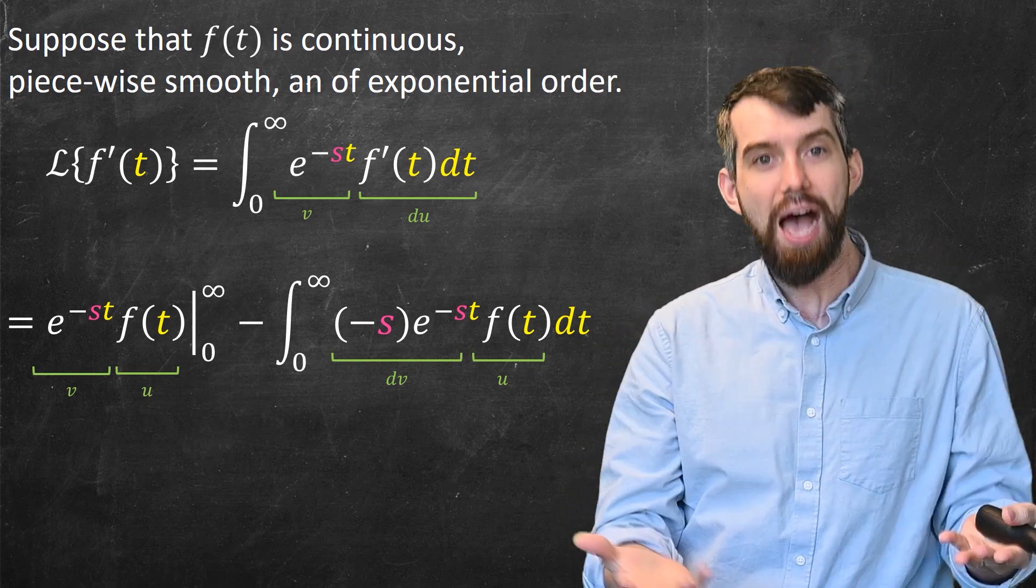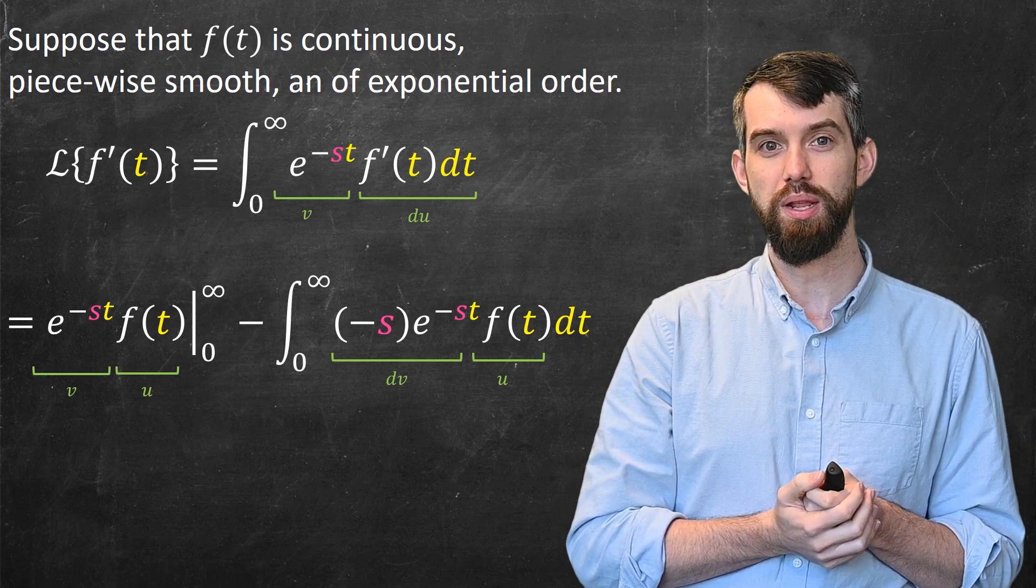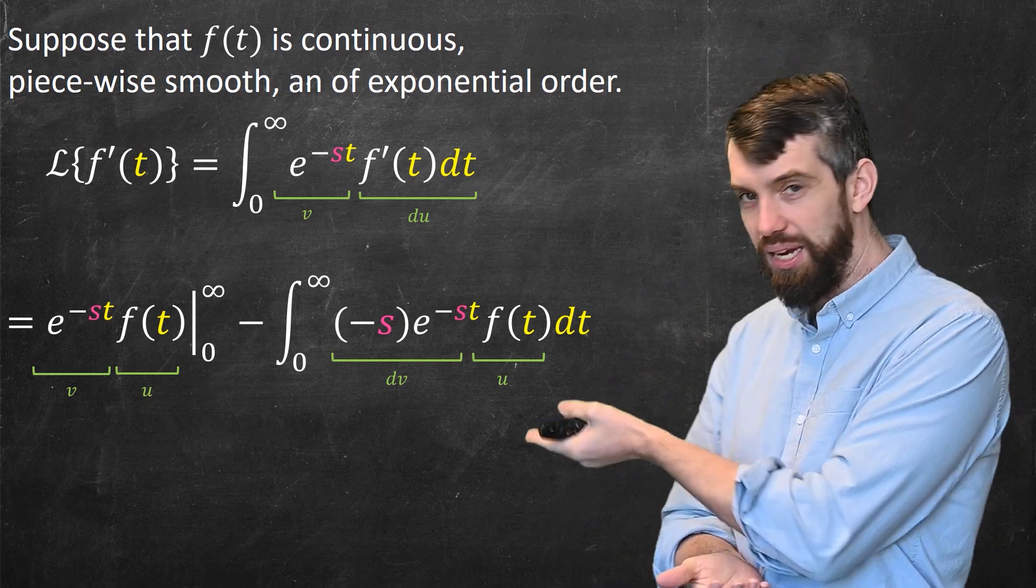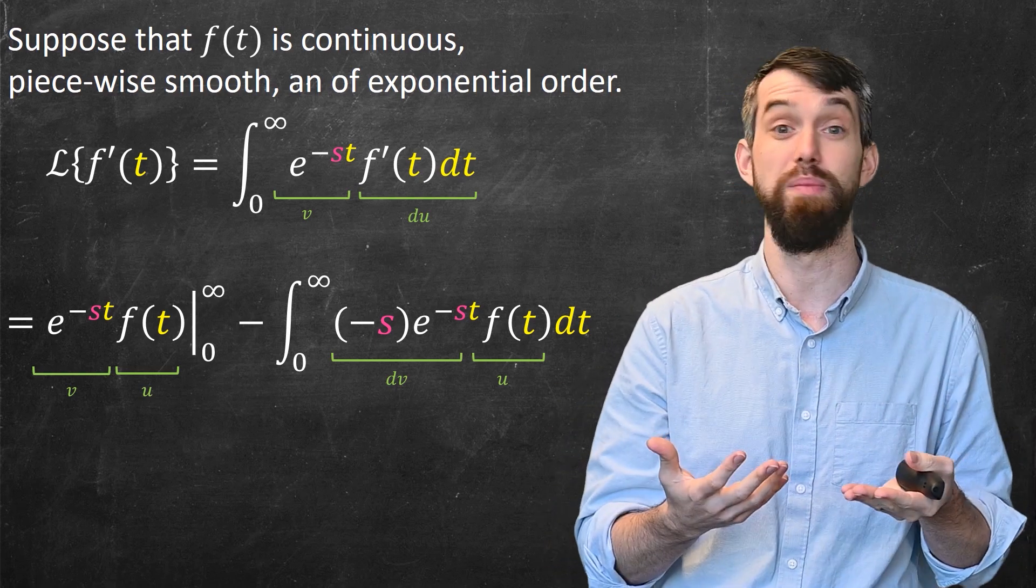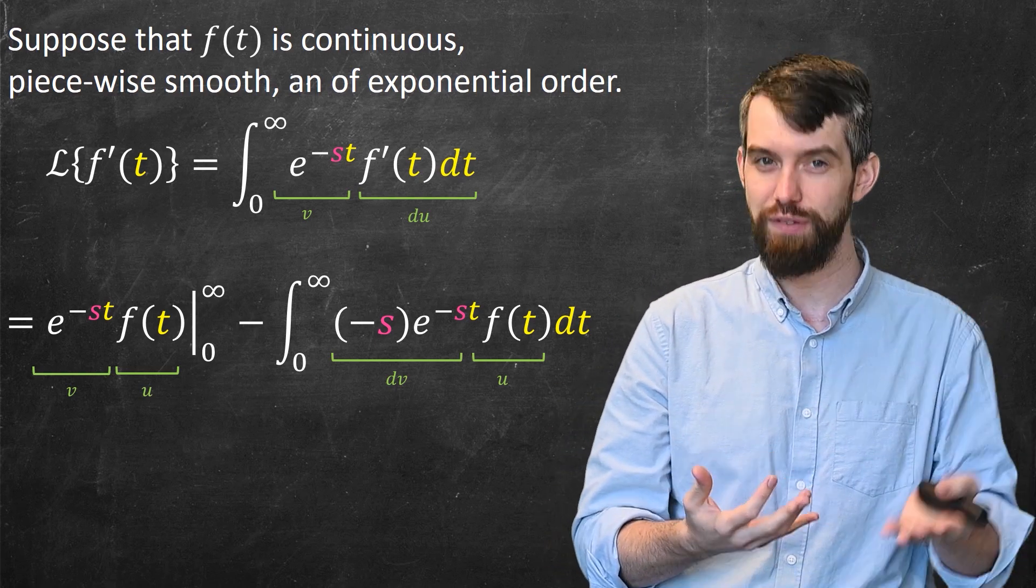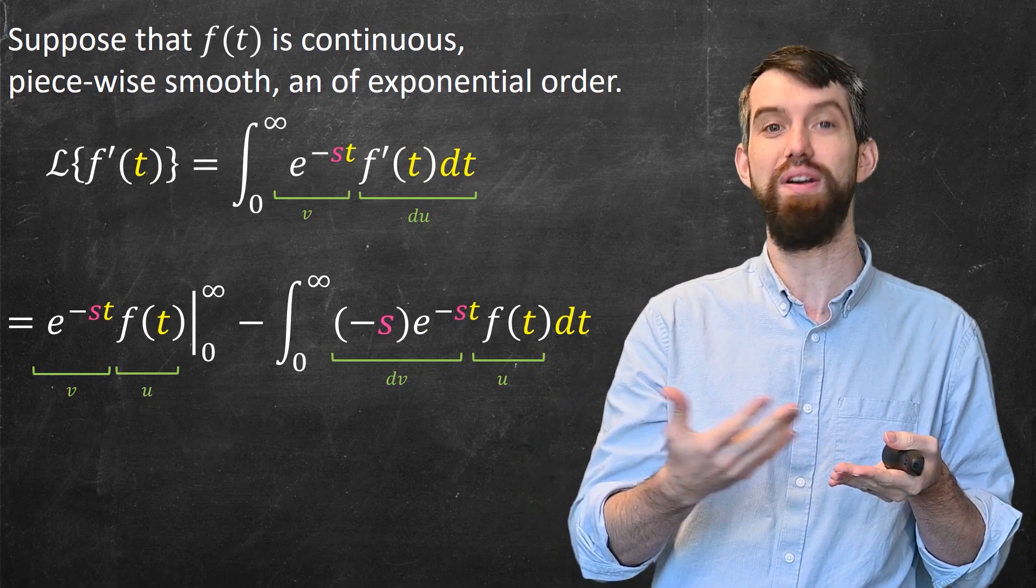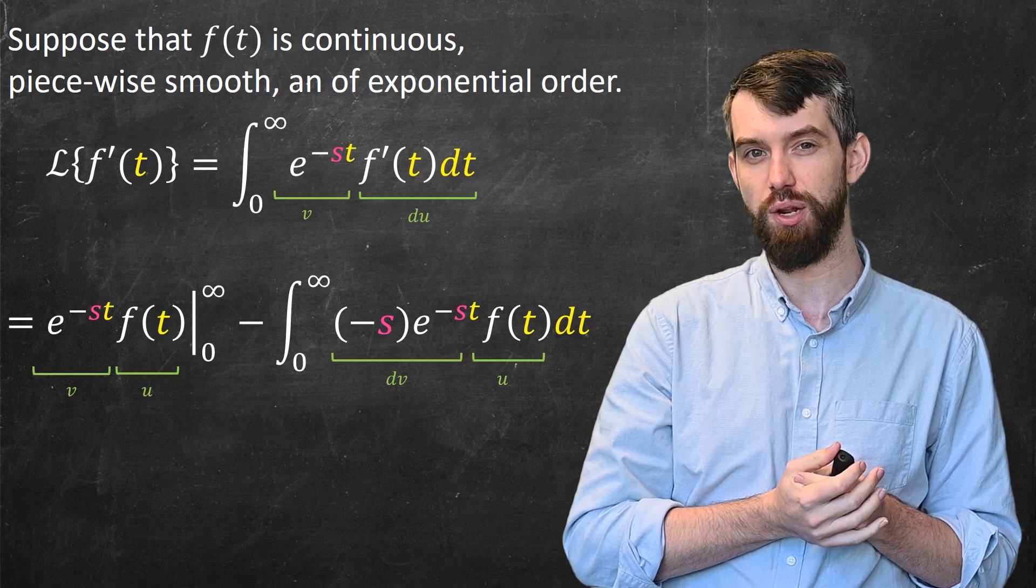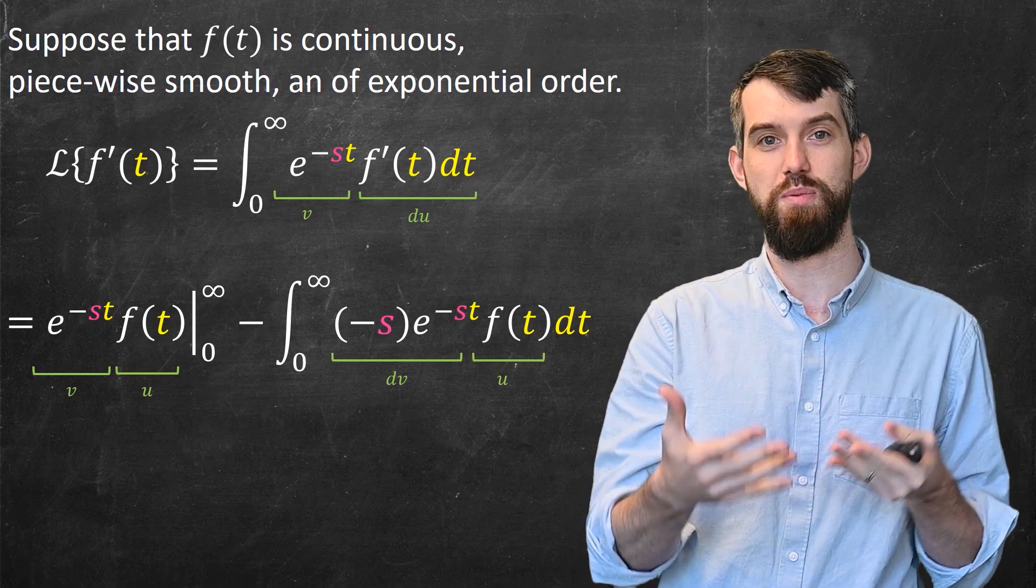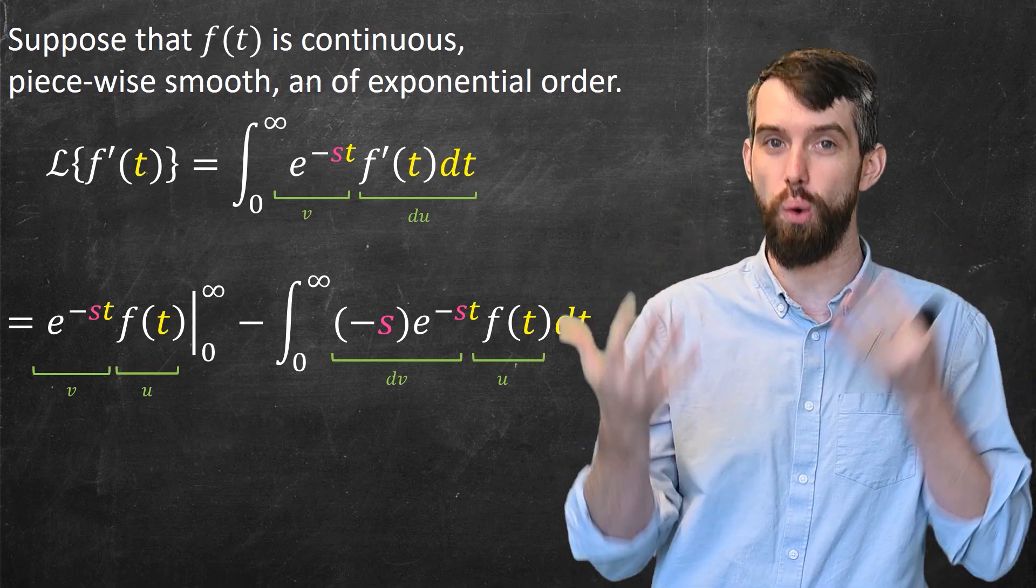What is that integral going to be? Let me look at the beginning portion, the constant term that's evaluated at 0 and at infinity. When I plug in infinity, I'm going to have a negative exponential times whatever f(infinity) was, and this is where we use the fact that we have it being of exponential order.